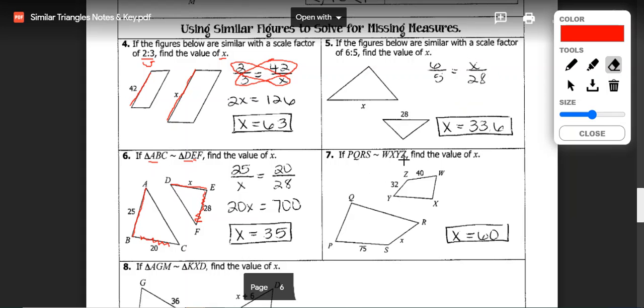Here you should have used the similarity statement to determine which sides were similar and set up 75 over 40 is equal to X over 32. Could have also said 40 over 75 is equal to 32 over X. Either one will work. Leaving you with 40X is equal to 2400 and X is equal to 60.